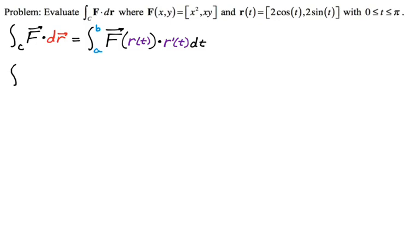So let's do the problem. We got to go from our bounds are zero to pi, those are given. Now we got to find F of r of t. And it's going to be a vector.